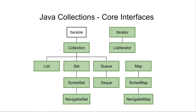The second interface is the Collection interface, and that represents some kind of abstract collection of objects, of elements. This interface contains methods like add and size, so you can see how many elements are in the collection.